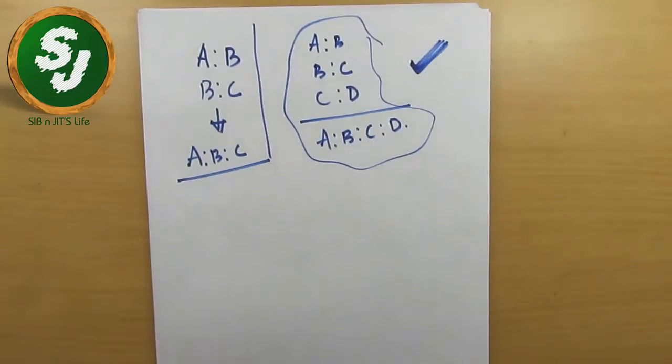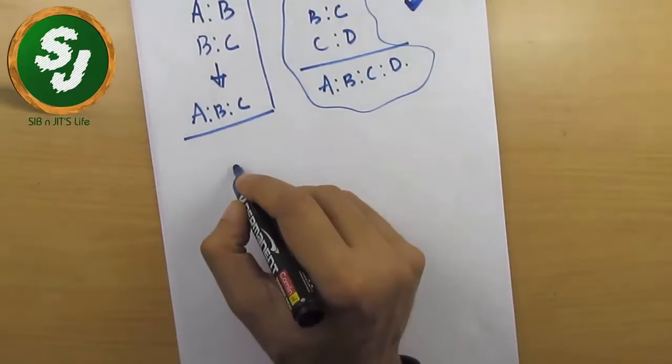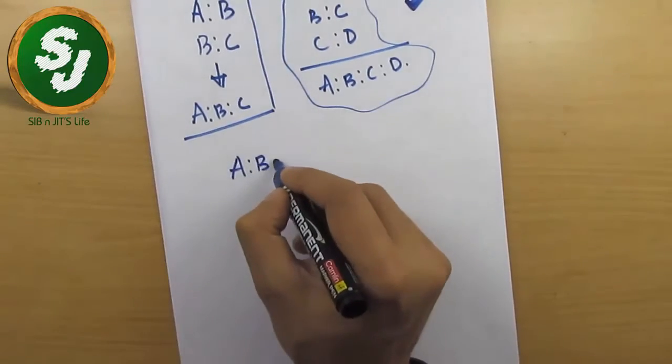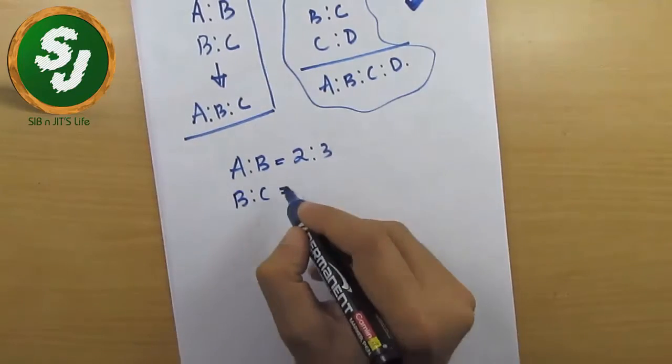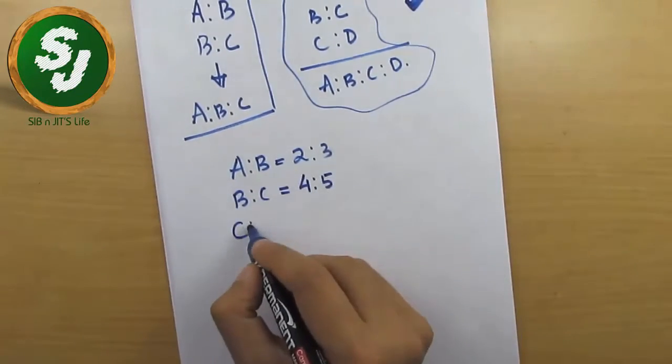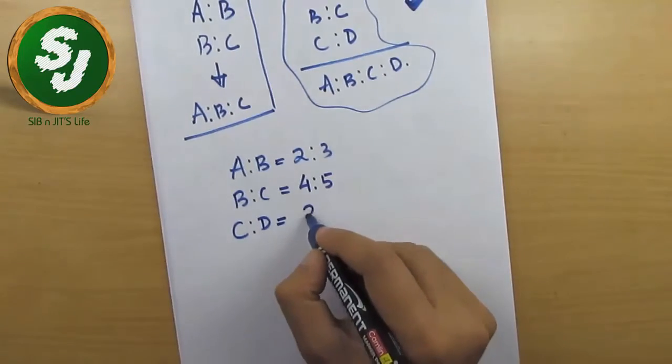So I ask you this: A is to B equals 2 is to 3, B is to C equals let's say 4 is to 5, and C is to D is 2 is to 7.